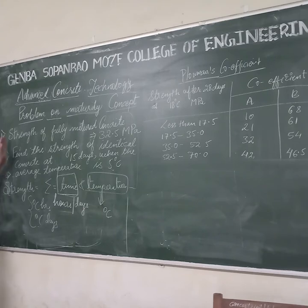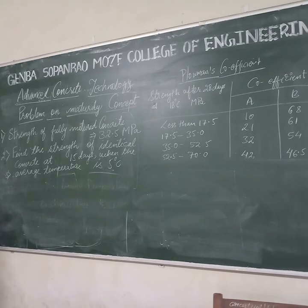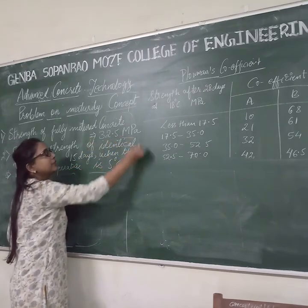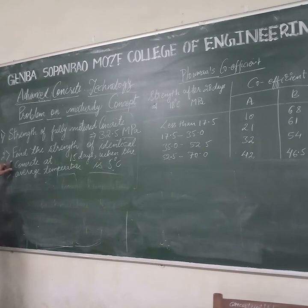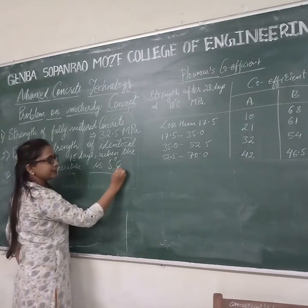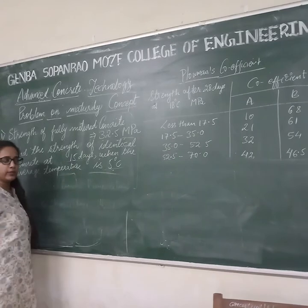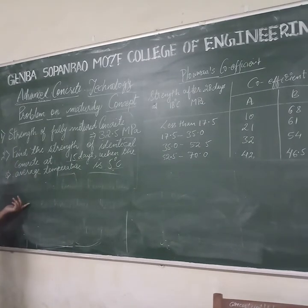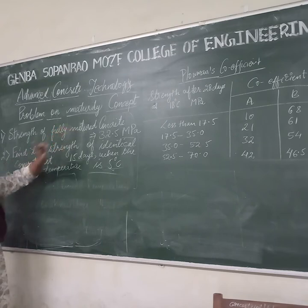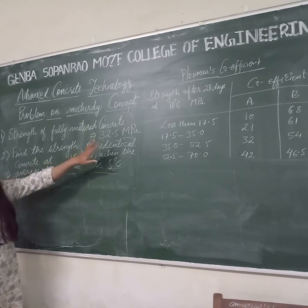Coming to our numerical — in this numerical the question is: find the strength. The given criteria in this question is that the strength of fully matured concrete is 32.5 megapascal. What you have to find in this question is the strength of identical concrete at 15 days when the average temperature is 5 degrees centigrade. The days and average temperature are given, and you must find how much strength the concrete has developed at 15 days.